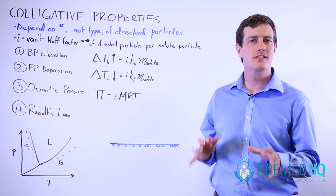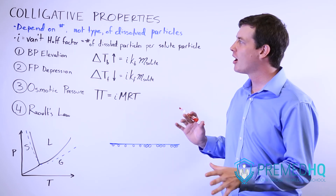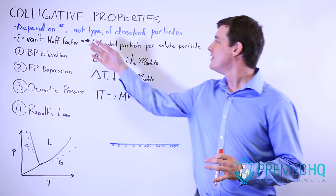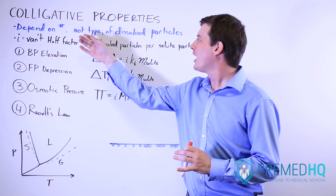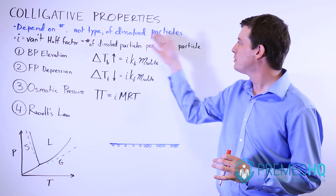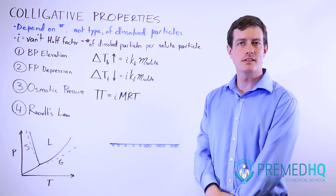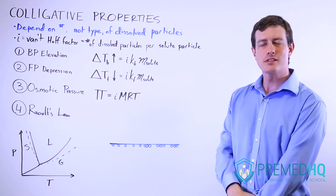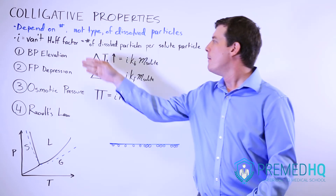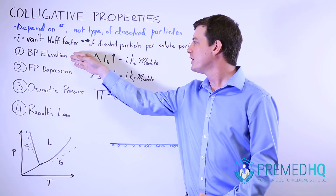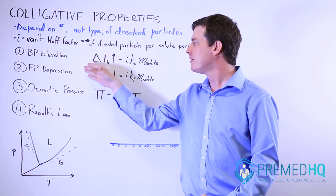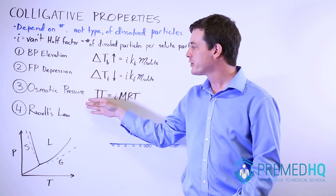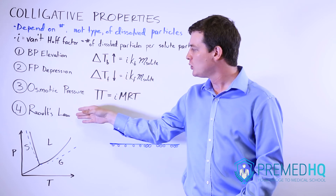Colligative properties are a series of properties of liquids that depend on the number rather than the type of dissolved particles within a solution. There are four main ones that you have to know for the MCAT: boiling point elevation, freezing point depression, osmotic pressure, and Raoult's Law.